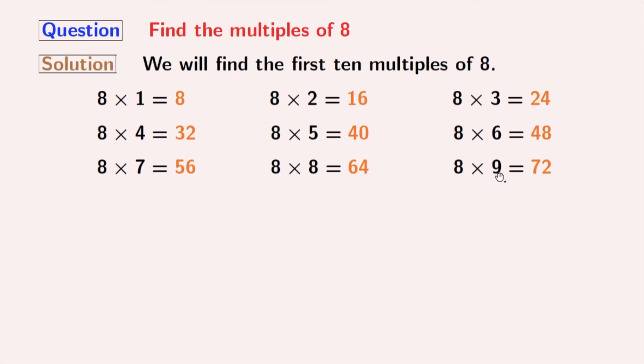8 times 9 is equal to 72. And multiplication of 8 and 10 gives us 80.